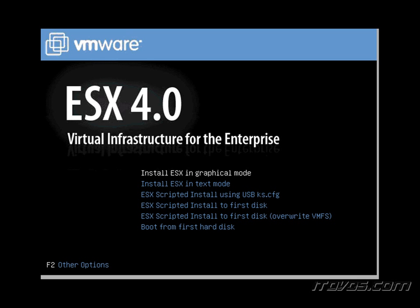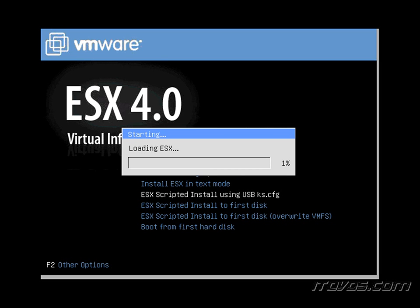I've inserted my USB flash drive with the ks.cfg file into my server, and I've also put the ESX4 DVD into the server. It's important that the CD-ROM is above removable devices in your BIOS boot order so it boots off the DVD and not the USB key. I'm going to scroll down to 'ESX scripted install using USB-KS.cfg', hit Enter, and it's going to go ahead and load ESX.